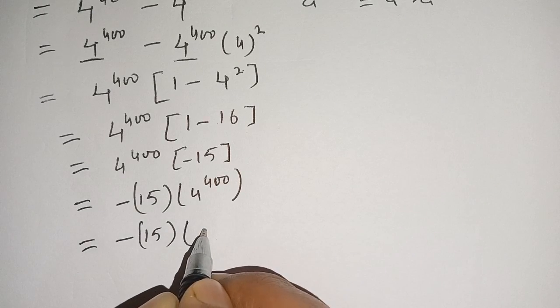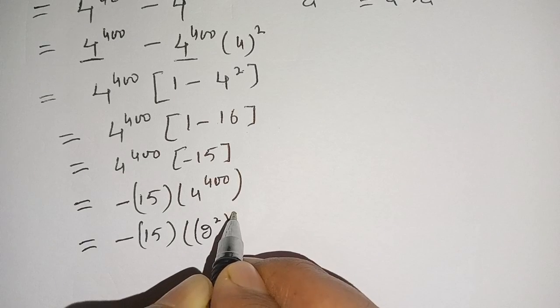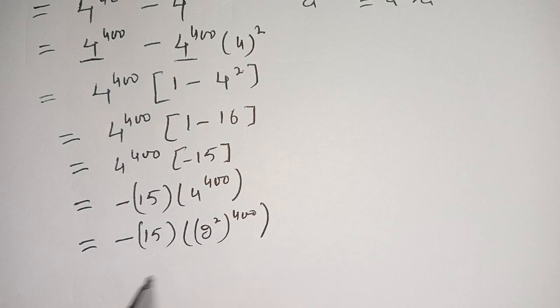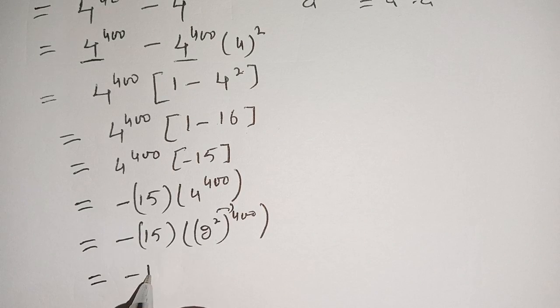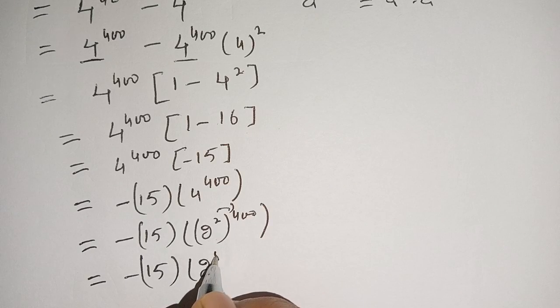2 power 2 power 400. Now we can multiply its power. We get minus 15 and 2 power 2 times 400, which is 800.